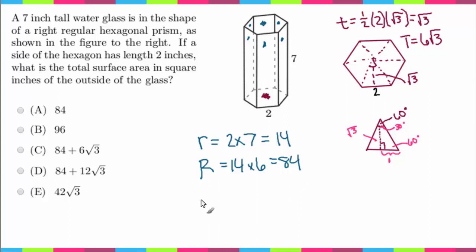So we have this, let's just say area is equal to all of the rectangles plus all of the triangles, and that is going to equal 84 plus 6 rad 3.